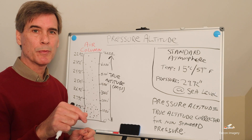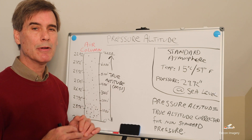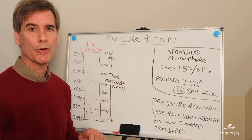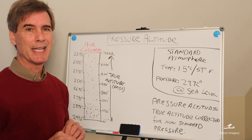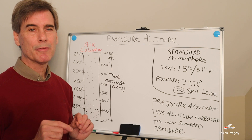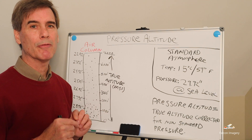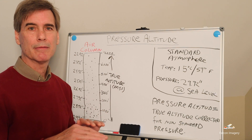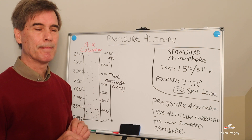What we put into the Kollsman window for barometric pressure gives us the true elevation of the aircraft over the earth, but it doesn't give us the pressure altitude. The pressure altitude is the information we need because that's going to tell us how the aircraft is actually going to perform relative to how many feet we are above the ground in true altitude.